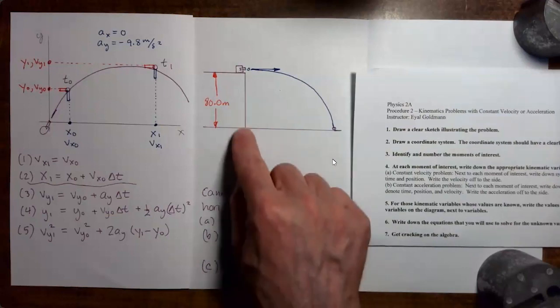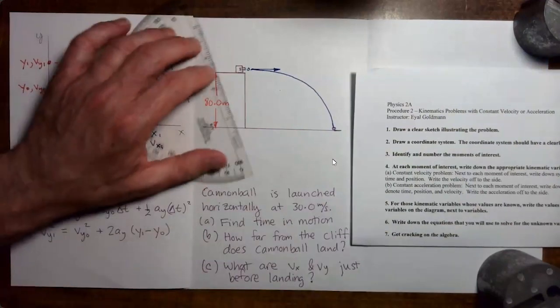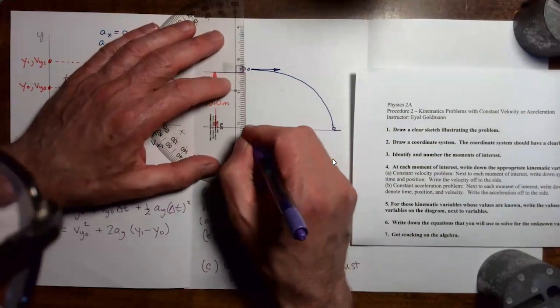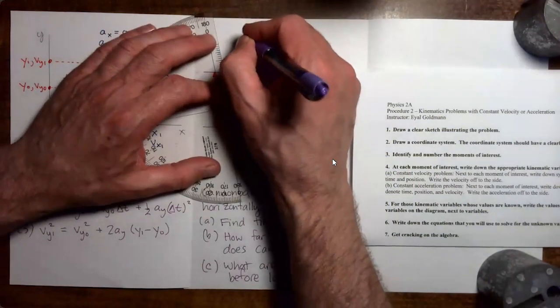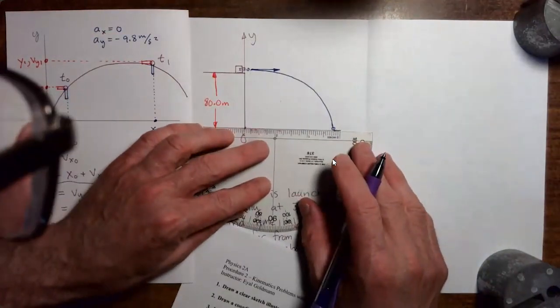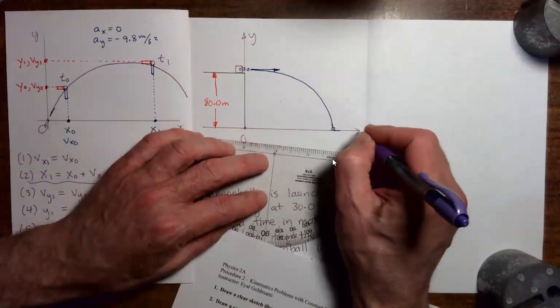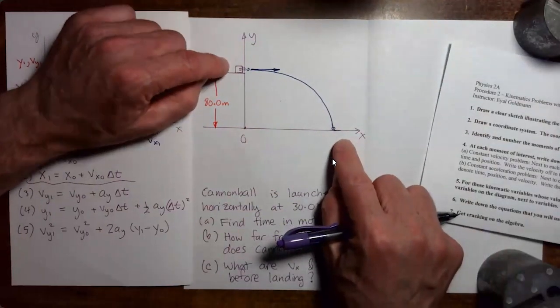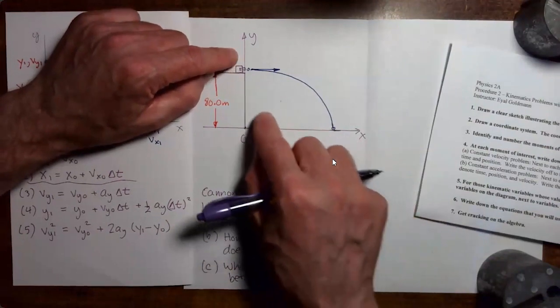And you can see that if I put the origin here, I'll just go ahead and draw that in. I put the origin here, y-axis pointing up, x-axis pointing to the right. And you can see with this choice of the axes, all of the action takes place in the first quadrant.